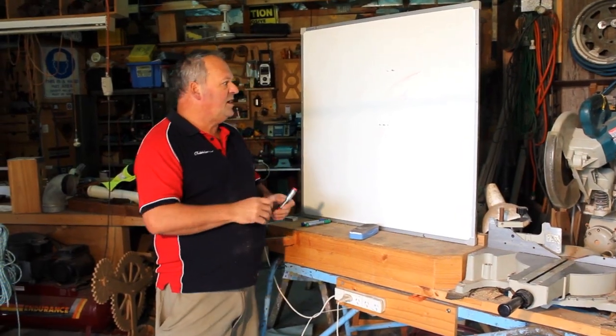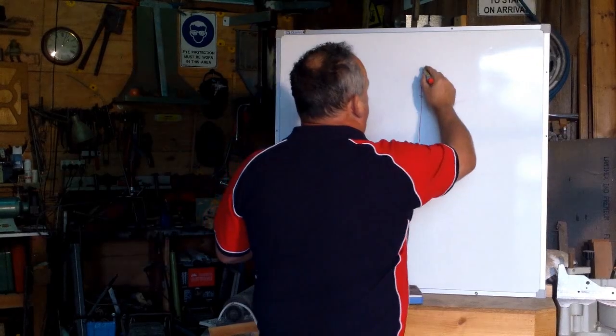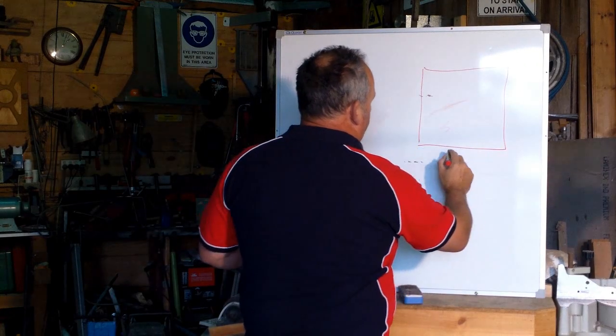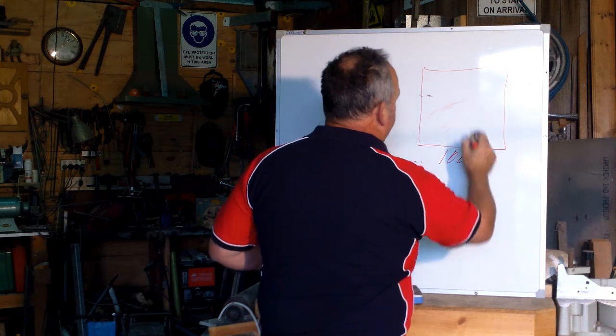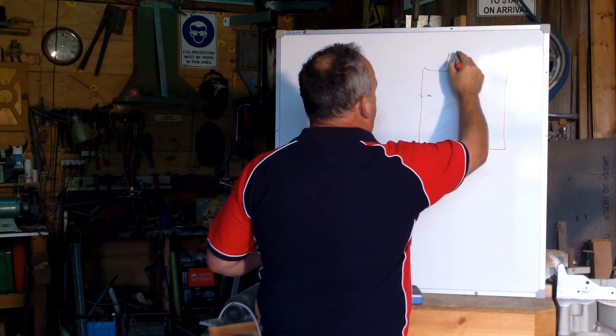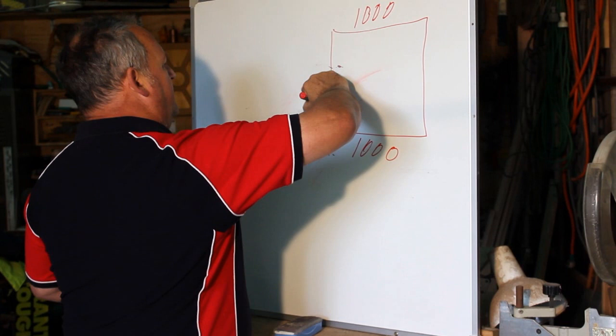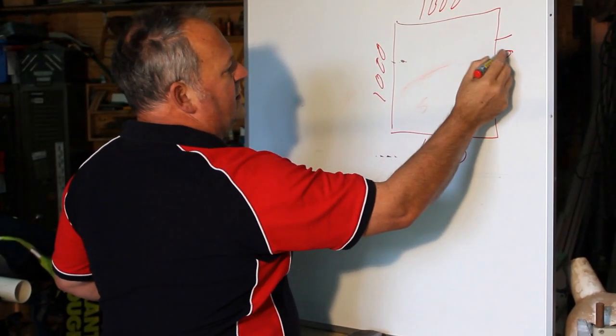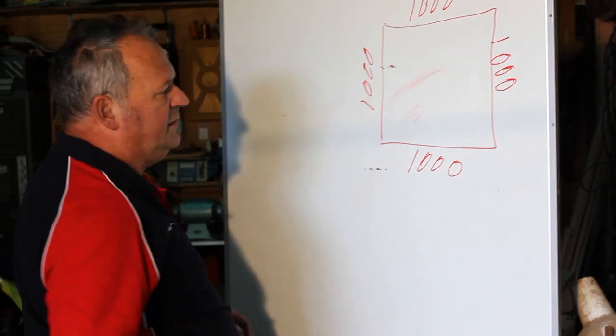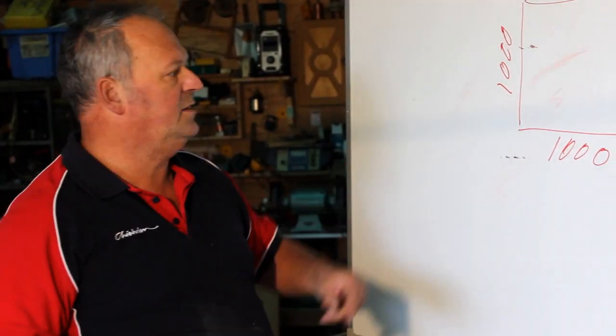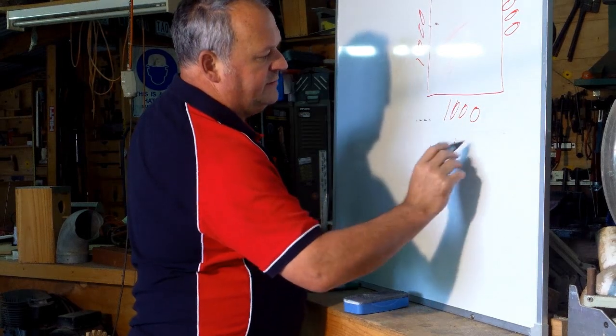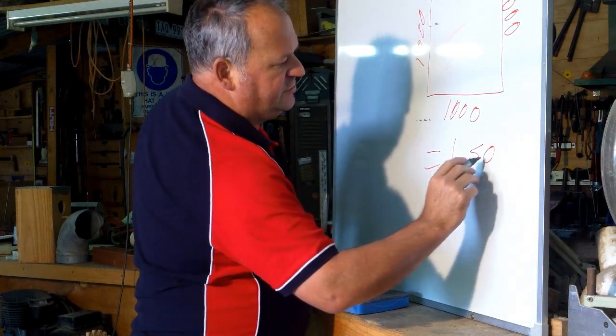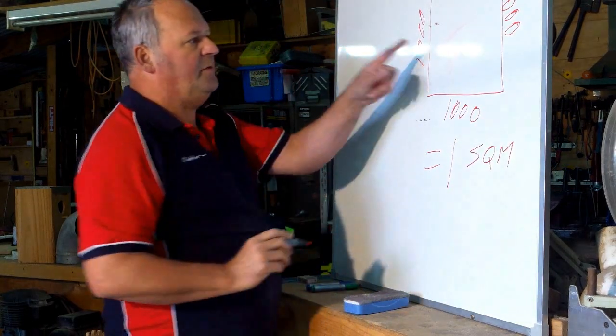So we start off, we have to look at this. We have a square and we say it's a thousand, a thousand, a thousand and a thousand. So one square metre equals one SQM, one square metre.